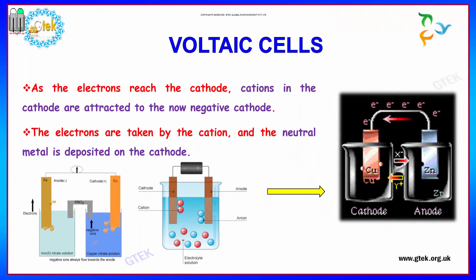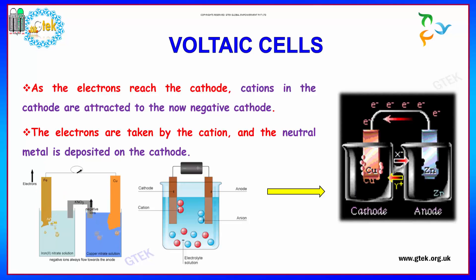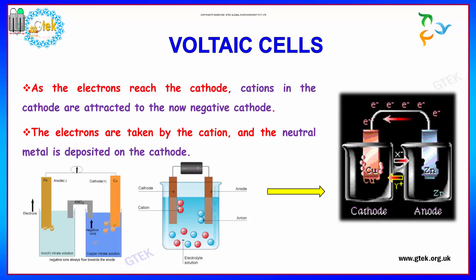As the electrons reach the cathode, cations in the cathode are attracted to the negative cathode. The electrons are taken by the cation and a neutral metal is deposited on the cathode. This is how the process happens.